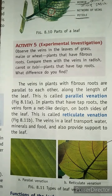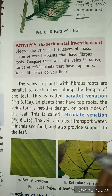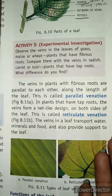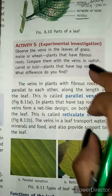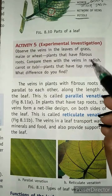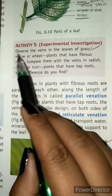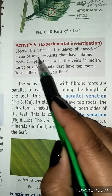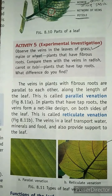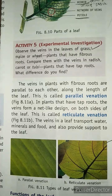In this activity, you will take two different leaves — like maize or wheat and grass — and observe the venation, that means the arrangement of veins on each leaf.